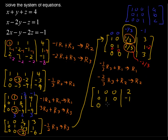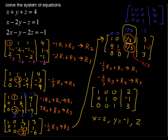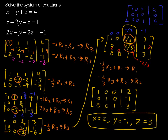Row 3 stays the same: 0, 0, 1, 3. So x equals 2, y equals negative 1, and z equals 3. And that is the Gauss-Jordan elimination method to solve a system of three equations.